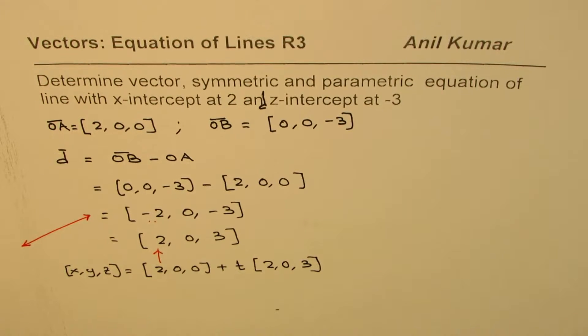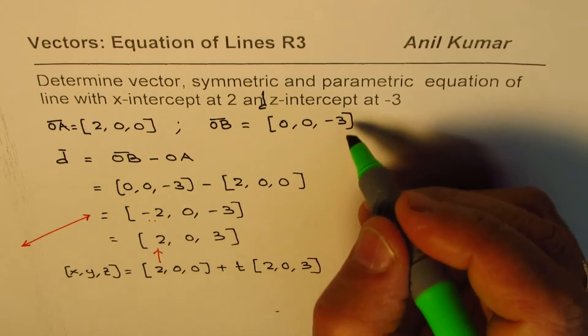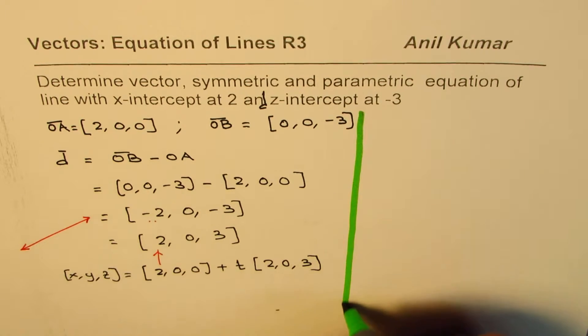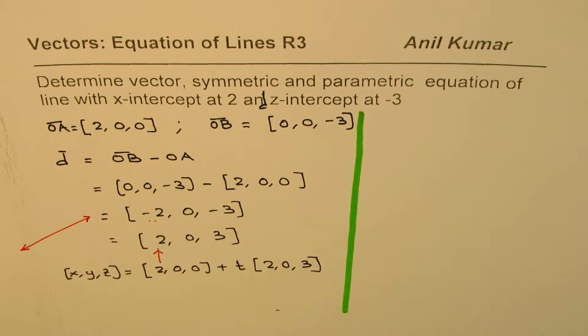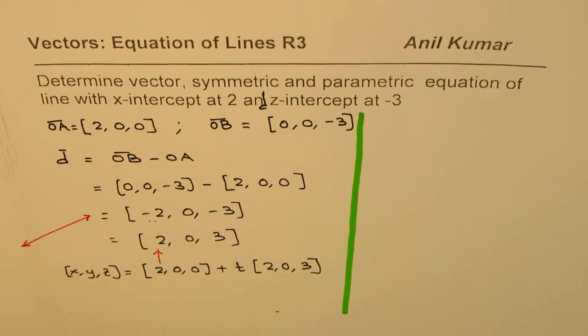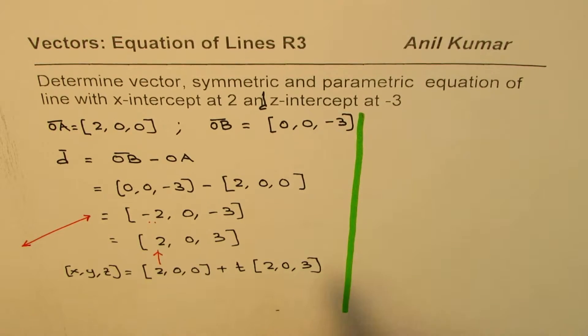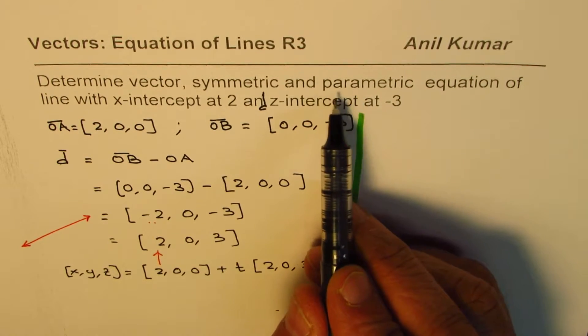So, that gives us the vector equation for the given condition where x and z-intercepts are given to us. Treat x and z-intercepts as two separate points. So, if you know two points, you can always find the equation of the line. Now, the idea is to convert this to the other form, symmetric and parametric form.